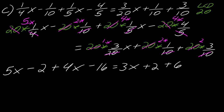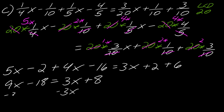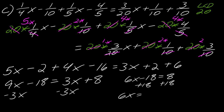Now I can collect like terms: 5x plus 4x is 9x, and negative 2 minus 16 is negative 18 on this side. The other side is 3x plus 8. I subtract 3x to get 6x minus 18 equals 8, then add 18 to both sides so 6x equals 26, then divide both sides by 6. You do get a fractional answer — reduce by dividing top and bottom by 2, so the final answer is 13/3.